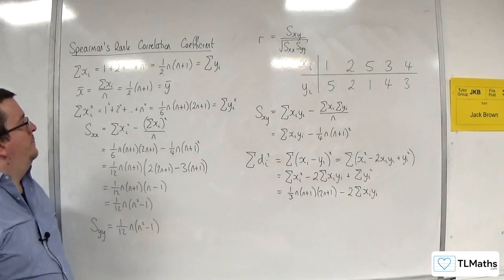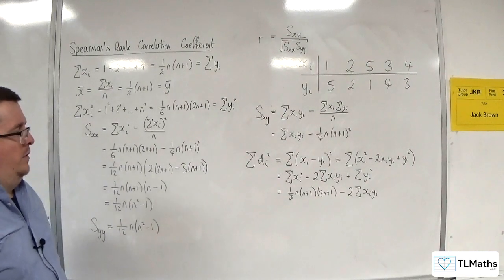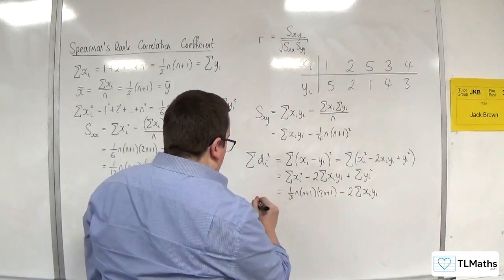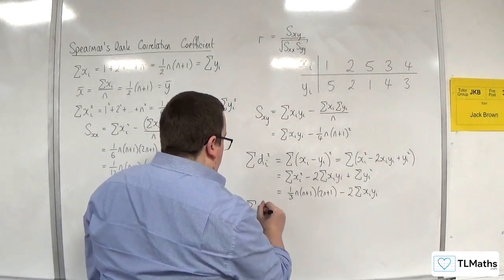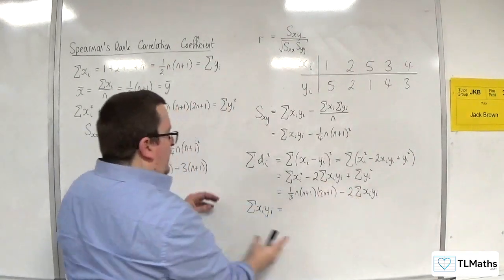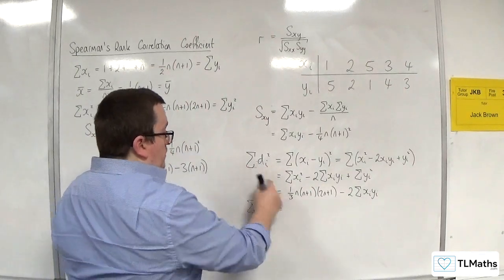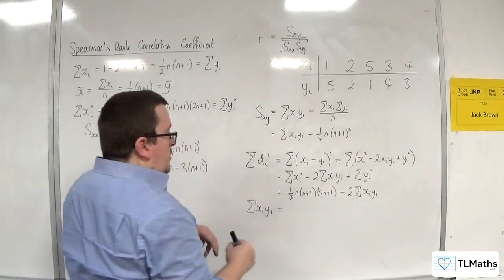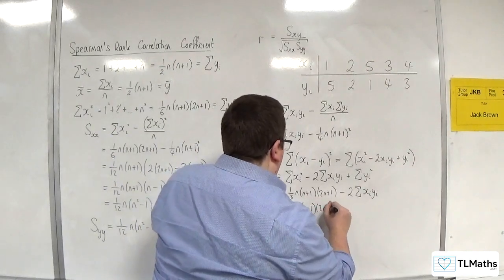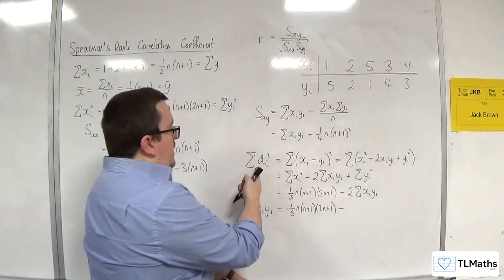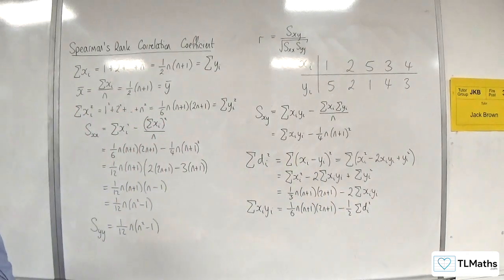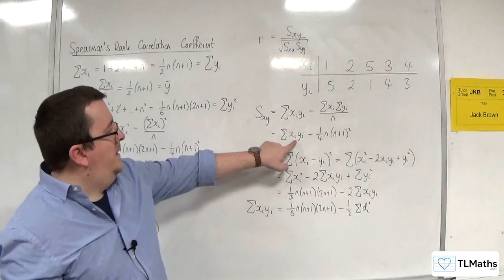From there, I can rearrange this equation to get the sum of XᵢYᵢ. Bring the sum of Dᵢ² term over and divide through by two, and move the other term to the right-hand side and divide by two. So we get: sum of XᵢYᵢ = ⅙N(N+1)(2N+1) − ½·sum of Dᵢ².